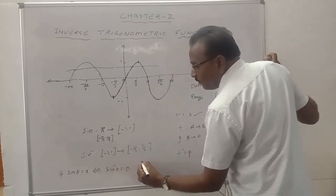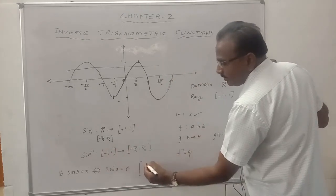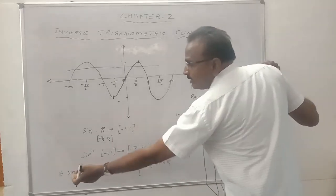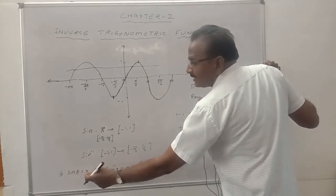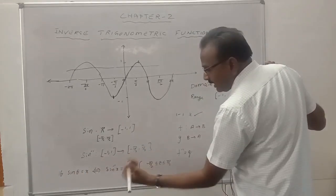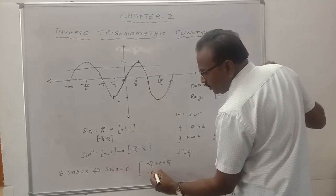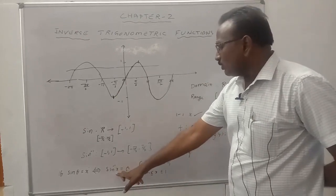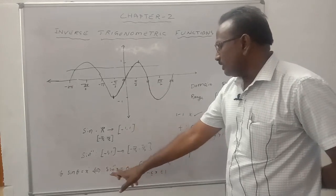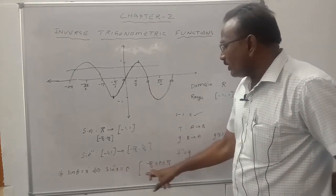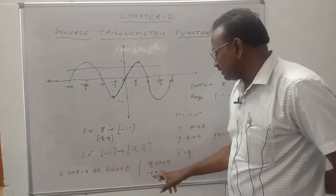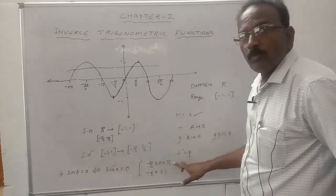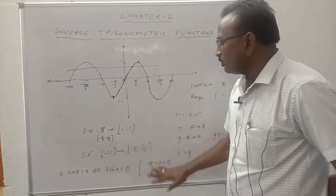Here, x is the domain of sine inverse and theta is the range. Therefore, the domain of sine inverse x is the closed interval minus 1 to 1, and the range (principal value branch) is the closed interval minus pi by 2 to pi by 2. This is the definition of the inverse sine function.